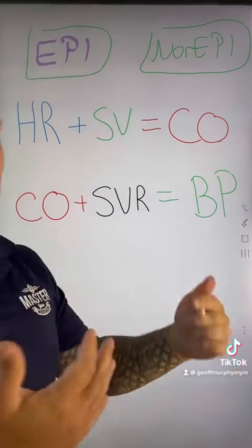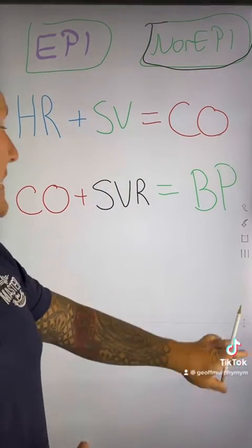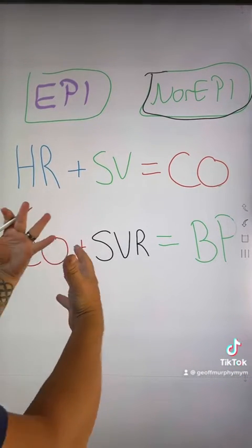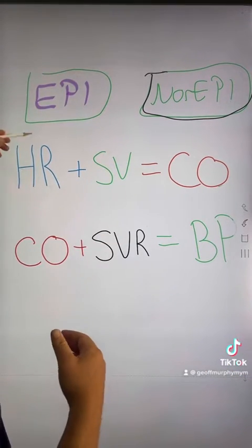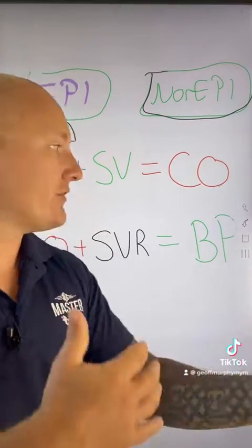And so in septic shock, the strong choice is going to be norepinephrine here as opposed to epi. Now why is that? Well, it's actually because of the heart rate itself. So we know that in septic shock, we already have an elevated heart rate in order to compensate for the decreasing mean arterial pressure.